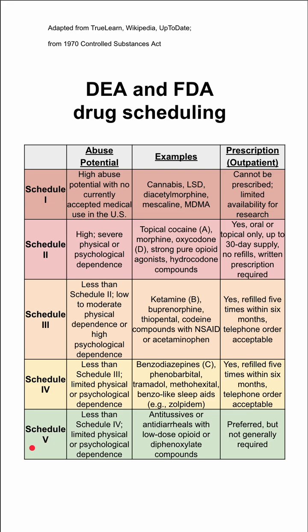Lastly, Schedule 5 has less abuse potential than Schedule 4, with limited physical and psychological dependence. This includes antitussives or antidiarrheals that have low opioid compounds mixed in. These do not necessarily require a prescription, but sometimes it is preferred.